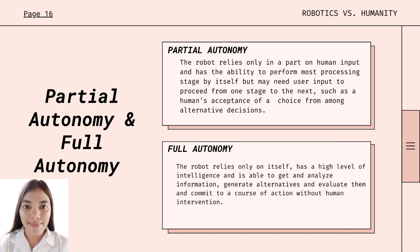In the field of robotics, there are the so-called partial autonomy and full autonomy. Partial autonomy means the robot relies only in part on human input and has the ability to perform most processing stages by itself, but may need user input to proceed from one stage to the next — such as a human's acceptance of a choice from among alternative decisions. In short, partial autonomy includes active human-robot interaction.